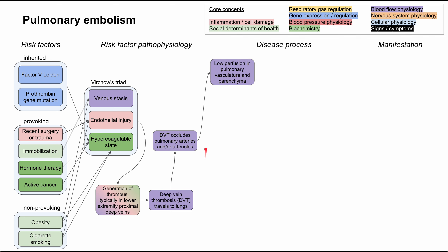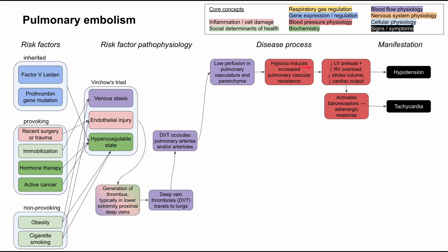The disease process expands broadly from here, so we'll work through it one section at a time. First, the DVT in the pulmonary arteries can cause low perfusion in the pulmonary vasculature and parenchyma. This results in hypoxia, inducing increased pulmonary vascular resistance. Remember that when you have hypoxia in the lungs, the body's response is to decrease blood flow to that section of the lung so as not to waste the oxygen in your breath. This vasoconstriction increases pulmonary vascular resistance, which results in decreased left ventricular preload. The right ventricle becomes overloaded because it's hard to pump forward against increased pulmonary vascular resistance. The result is that cardiac stroke volume and cardiac output are decreased, directly causing hypotension.